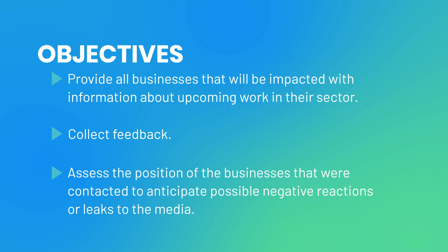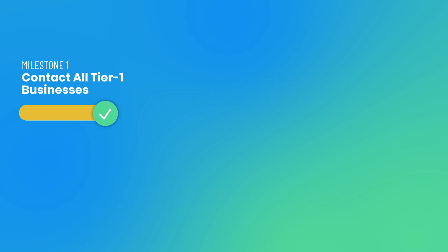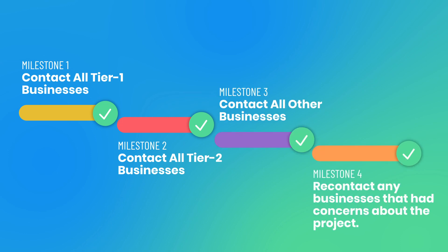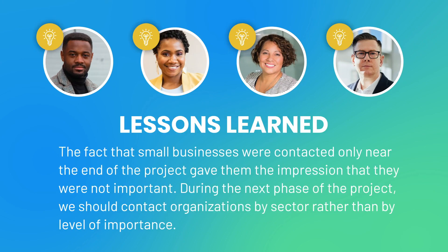Setting objectives and milestones will help Jessica plan more effectively. Objectives can keep the public involvement team focused and make sure they understand when and how they will achieve their main priorities. Milestones can help Jessica recognize if things start to go off track so she can quickly reassess her strategy. Finally, proactively reflecting on a project's successes and failures will allow Jessica to incorporate what she and her team have learned in their future engagement activities, ensuring that her processes and plans will continually improve.